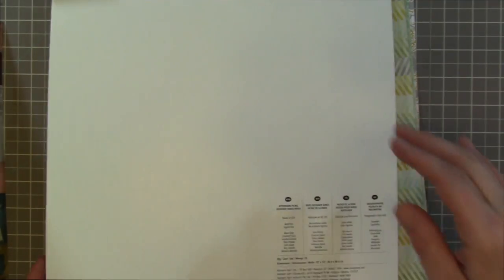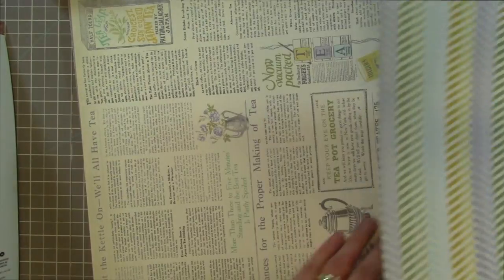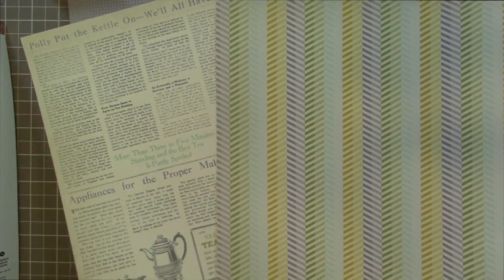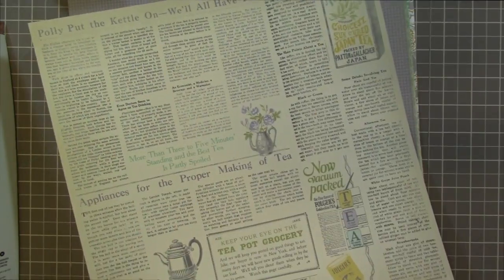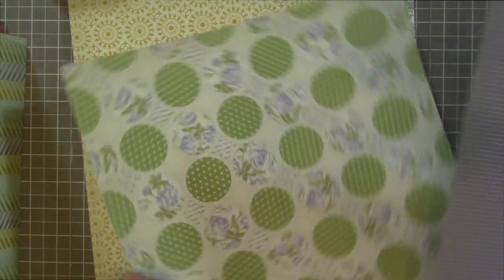This next one is Afternoon Picnic. It has Basic Gray, Crushed Curry, Coastal Cabana, Pear Pizzazz, Soft Suede, Very Vanilla, and Wisteria Wonder. It's got a lot of colors. So again this is set up for front and back so we have this pattern here and then we have another newsprint in there. Love this shade. Wisteria Wonder I really just started playing with and I really like it.